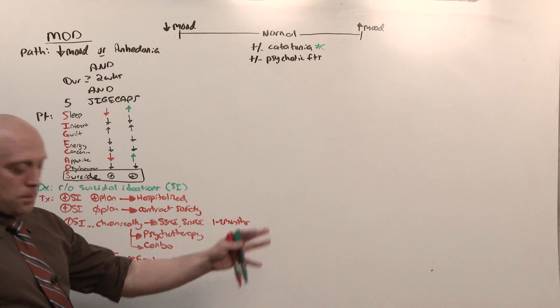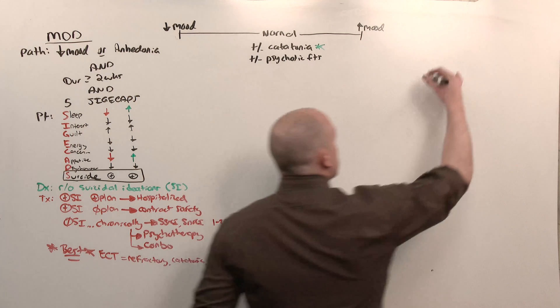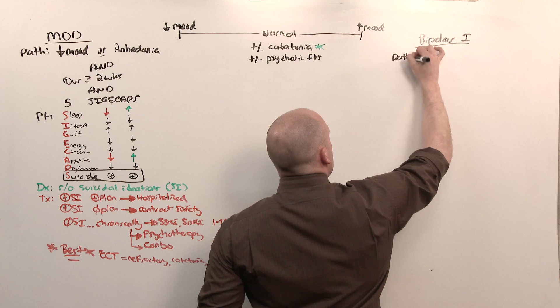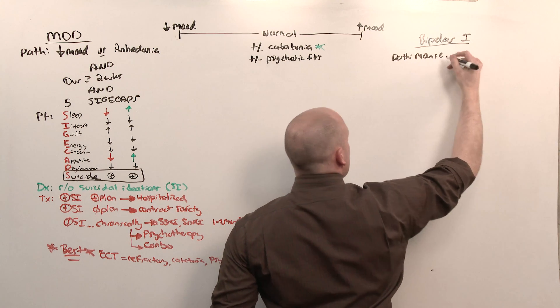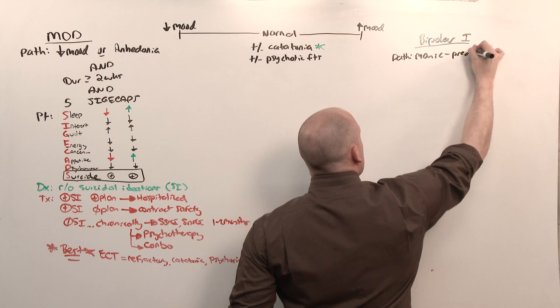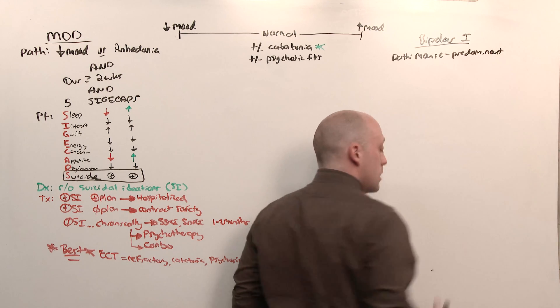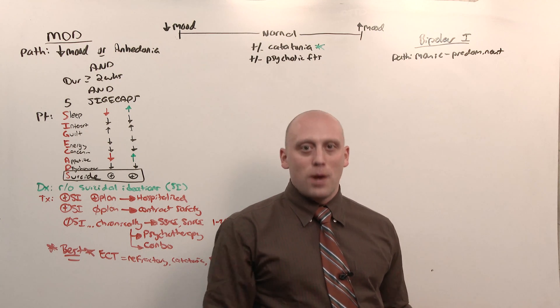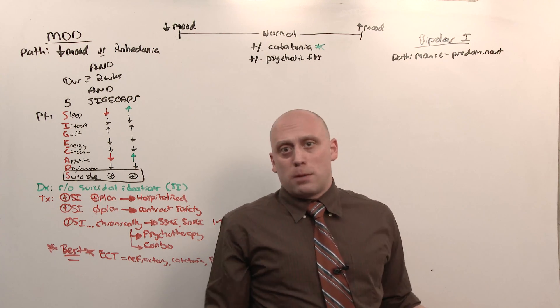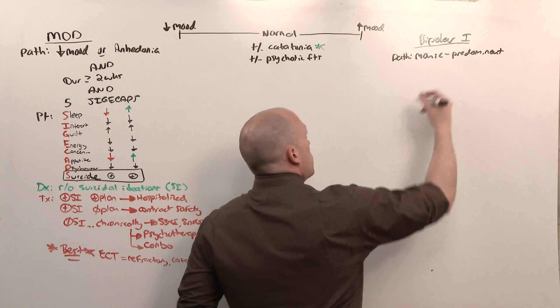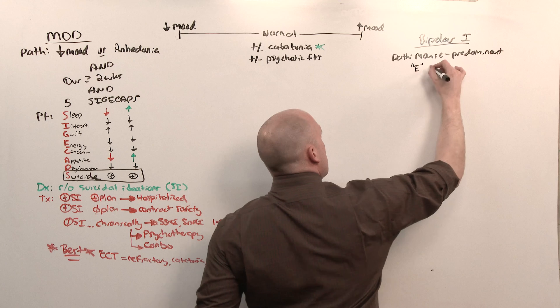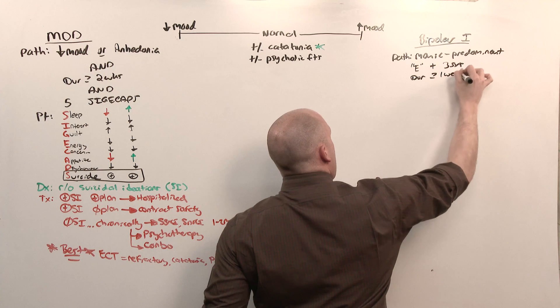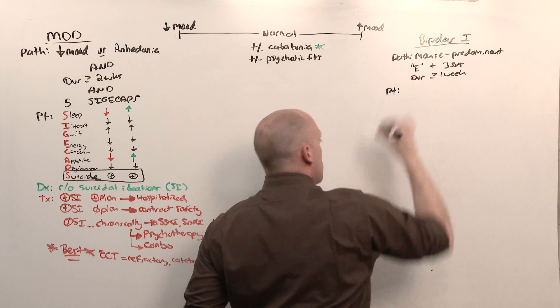Let's do the opposite side of the spectrum: bipolar 1 to follow it up. Bipolar 1 is terribly named because it is the manic predominant. What does that mean? It means bipolar 1 is categorized by severe mania. If you meet the criteria, you are bipolar 1. It should just be called manic disorder, sometimes with depression. But it's called bipolar 1, and to qualify, you have to have E plus three other symptoms, and a duration greater than a week. What's E and the three other symptoms? We have another mnemonic: DIGFAST.